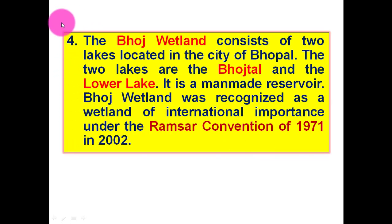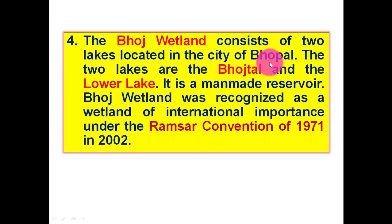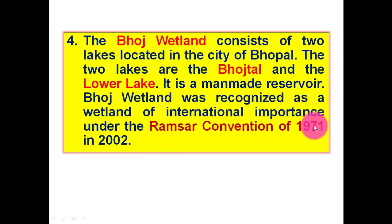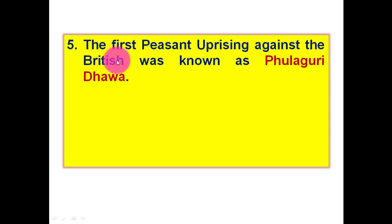Next, the Bhoj Wetland consists of two lakes located in the city of Bhopal — the Upper Lake and the Lower Lake. It is a man-made reservoir. The Bhoj Wetland was recognized as a wetland of international importance under the Ramsar Convention of 1971, in the year 2002.